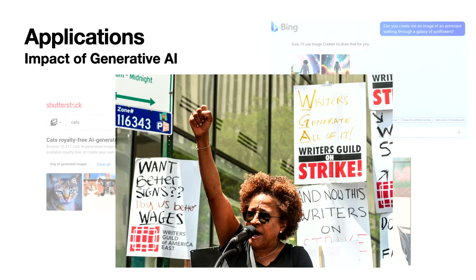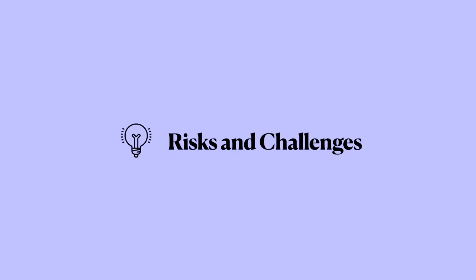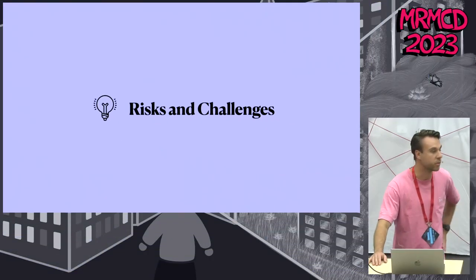In society, we've already discussed the negative implications. One example is an image displaying the Hollywood strikes, where people are afraid they will lose their jobs because of AI. This brings us to the challenges we are facing.